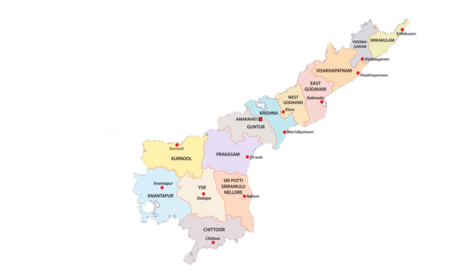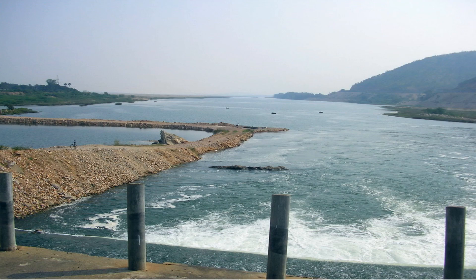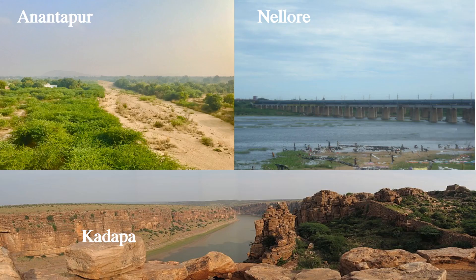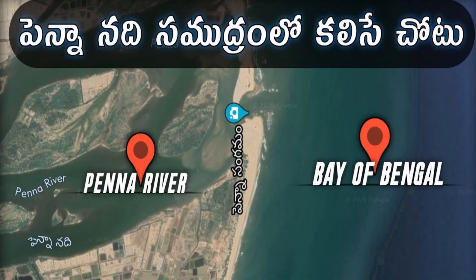Penna River flows through Anantapur, YSR Kadapa, and Nellore districts in A.P. and merges with the sea at Uthukota. This is the Penna River view in Karnataka. These are the Penna River views in Anantapur, Nellore, and Kadapa districts. This is the view of Penna River where it merges with the Bay of Bengal at Uthukota.